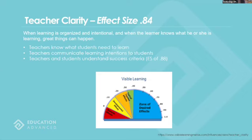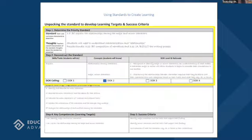Through this comprehensive meta-analysis — to my knowledge there's not been another one done like John Hattie's work — anything at 0.40 and above is going to help students accelerate a year or more in growth. Teacher clarity definitely ranks right up there. The three key bullets are: teachers knowing what students need to learn, teachers being able to communicate learning intentions to students, and teachers and students understanding the success criteria. When you filter out success criteria alone as something influential for student achievement, it has an effect size of 0.88 — ranking right up there for impact on student achievement.